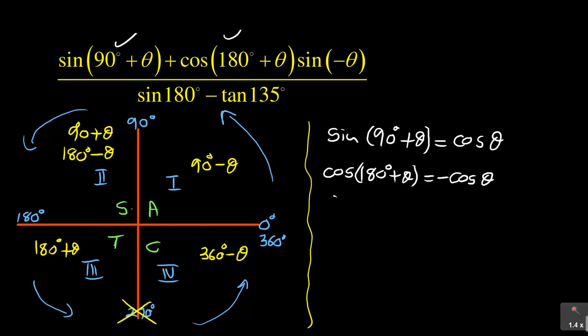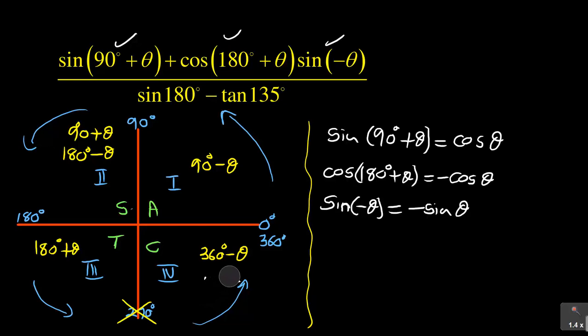Then the next one is negative angles: sin(−θ). What you need to know about negative angles is that the negative sign means you are now in quadrant number 4. In quadrant number 4, only cos is positive, so you will have negative sin θ, because sin and tan are negative in the fourth quadrant. So whenever you see the negative sign, know that we have landed in the fourth quadrant, and in that quadrant, only cos is positive.